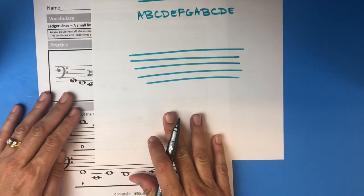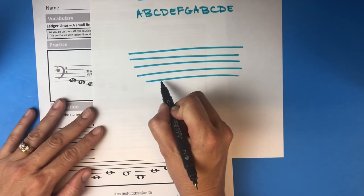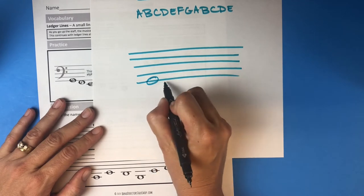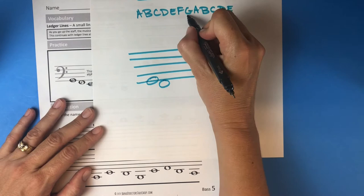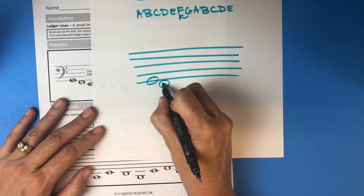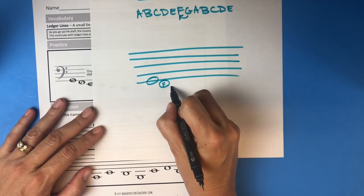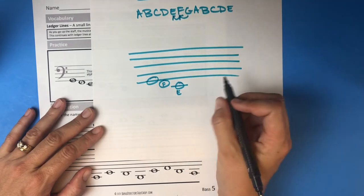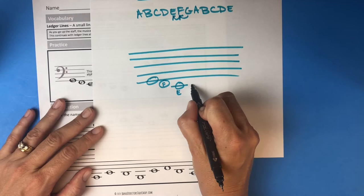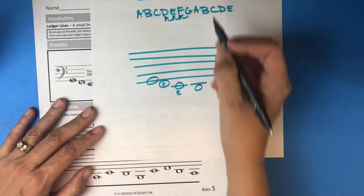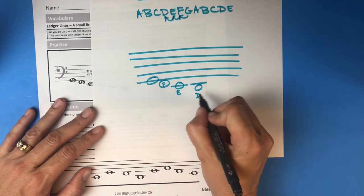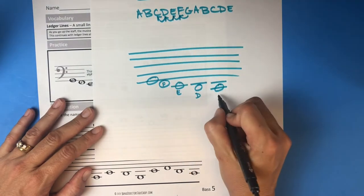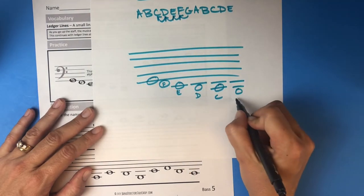Coming down it's still easy — we just have to think backwards. The bottom line is G — 'Good Boys Do Fine Always' — so this is G. The next note going down, going backwards in the alphabet, would be F. That space right there is F. Then we need a line, going backwards, so the first ledger line below the staff is E. The space below that is D. Two below is C, and one more is B.